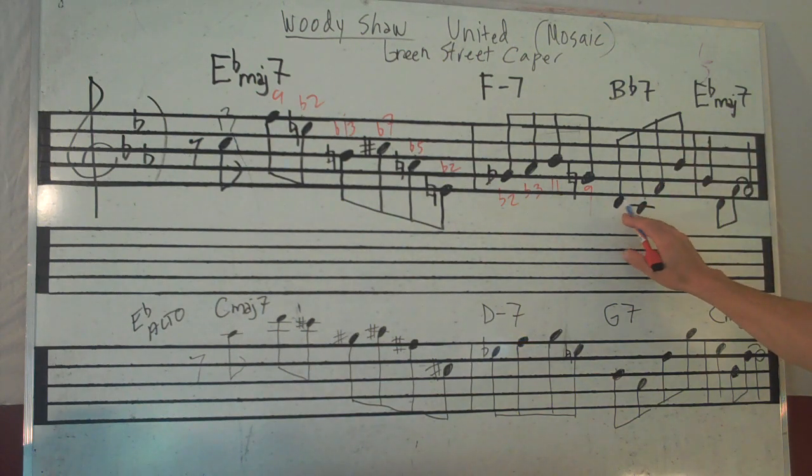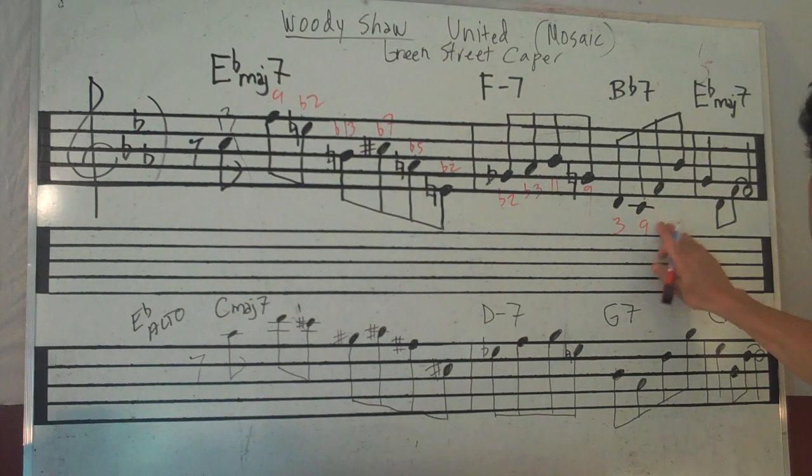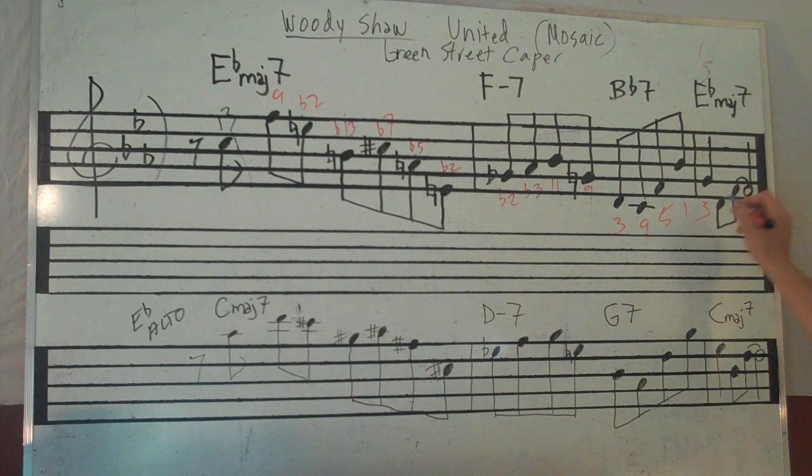And here's where it's, well, we'll get to it in a second. But we've got 3 here, a 9, an 11, or sorry, rather 5. B flat root, and then he's got 3, major 7, and to the 9 here.